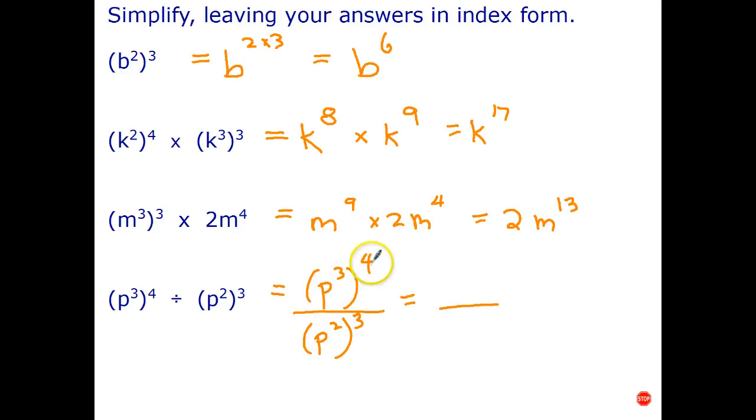Okay, that gives us p to the power of 3 times 4, which is p to the power of 12. This gives us p to the power of 2 times 3, which is p to the power of 6. And finally, to divide powers with the same base, we subtract indices, and that gives us p to the power of 6.